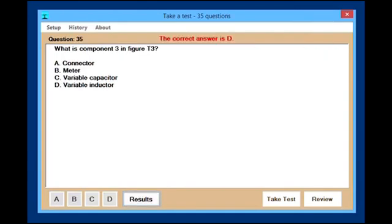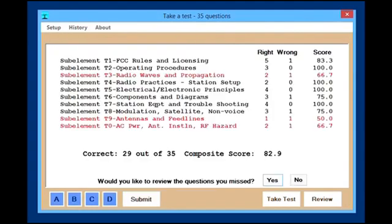Once you have submitted your last answer, you will get a results button at the bottom. If you click that or press enter, you'll see the results of the exam that you took. In this case, sub-element T3, T9, and T0 were my weak points. I barely passed with an 82.9.